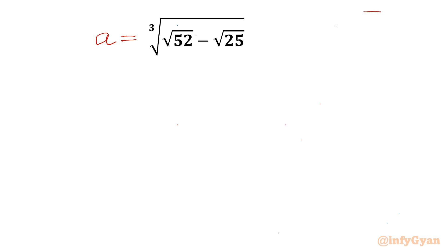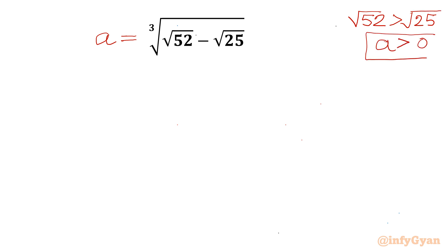Now, square root of 52 is greater than square root of 25, so the conclusion is that a should always be positive. So I can write a equal to cube root of square root 52 minus 5.